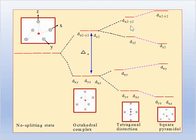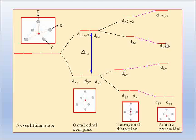So the splitting pattern of tetragonal distortion — the z-out type — means if we remove one ligand from the octahedral geometry, we get the square pyramidal geometry. The energy order follows the same pattern as tetragonal distortion. The orbitals with higher energy are destabilized further, and the orbitals with lower energy are stabilized further.